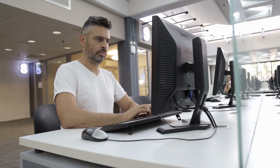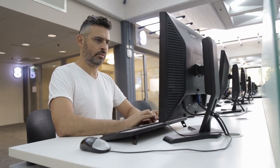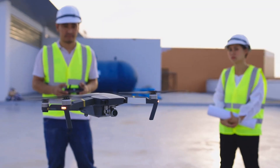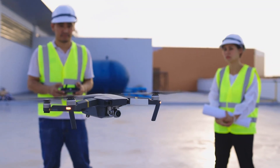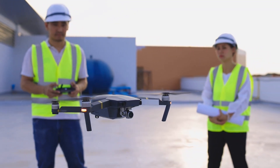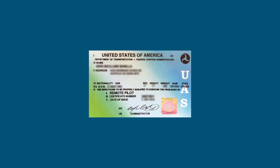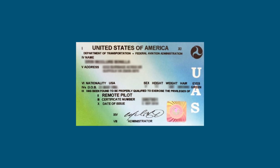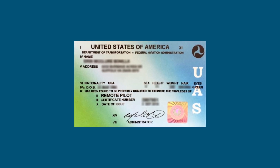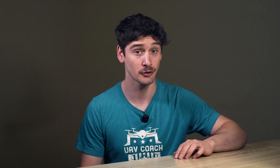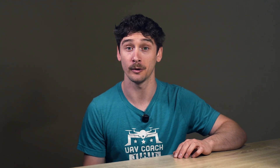So, you passed the FAA Part 107 exam. First off, congrats, that's an awesome accomplishment. But before you start flying commercially, there's one more important step. You need to apply for your remote pilot certificate through the FAA's IACRA system so you can legally fly under Part 107. Let me show you how to do it.